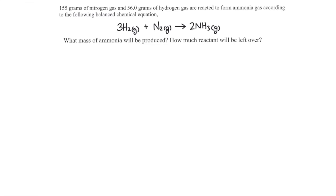Or we could determine the amount of product that could be formed by completely consuming each reactant, like calculating two separate problems. Then we could compare the amount of product formed by completely consuming the first reactant to the amount formed when completely consuming the second reactant. Whichever gives the smaller amount of product, that will be the limiting reactant. I'm going to solve this problem using that second method.